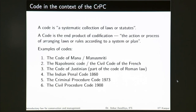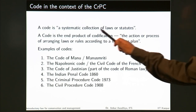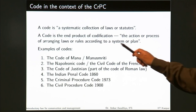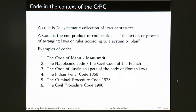When we talk about the CrPC, we need to look at what is a code and why we call it a code. A code is a systematic collection of laws or statutes — it is the end product of codification, which is the action or process of arranging laws or rules according to a system or plan. Examples of codes include the Code of Manu or Manusmriti, the Napoleonic Code or the Civil Code of the French, the Code of Justinian which is part of Roman law, the IPC, the CrPC, and the CPC.